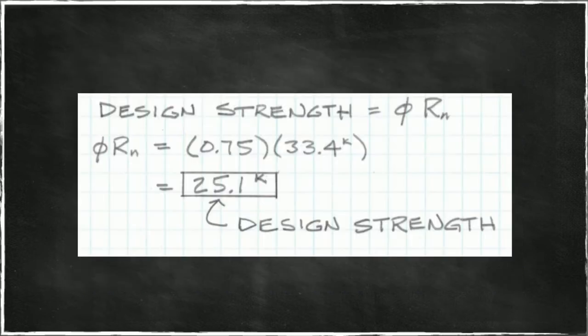Our design strength would be reduced by a strength reduction factor called the phi factor, which is 0.75 and that's a code requirement. So 0.75 times our ultimate strength or nominal strength leads us to 25.1 kips design strength for our weld assembly.